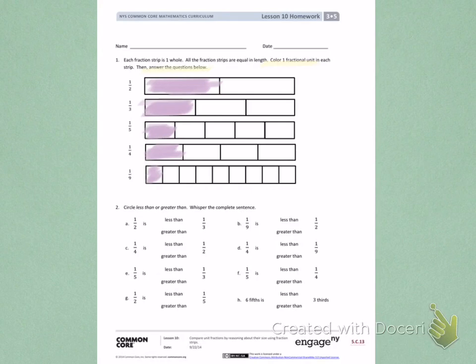Number 2. Circle less than or greater than. Whisper the complete sentence. 1 half is less than or greater than 1 third.